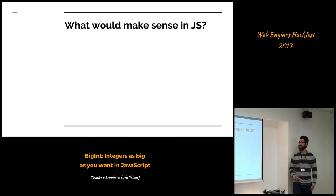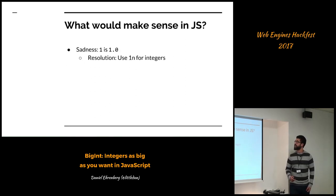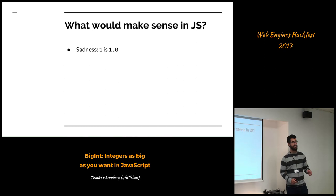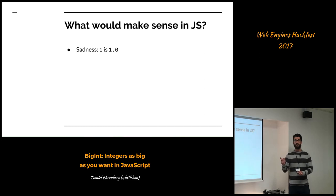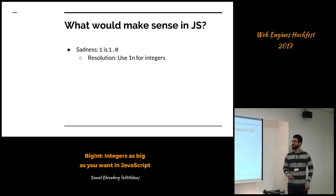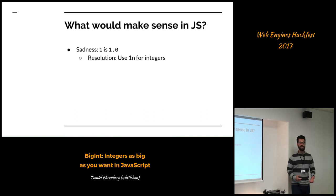But which one of these would make sense in JavaScript? What would make sense to add, given what we have already? In JavaScript, if you have the number one, it's a number — a float. Most languages distinguish between one as an integer and 1.0 as a float, but in JavaScript we already have both be floats and it's already too late. There's already plenty of code on the web which does one divided by two and expects the answer to be 0.5. The proposed syntax uses the `n` suffix when you're expressing a BigInt literal.